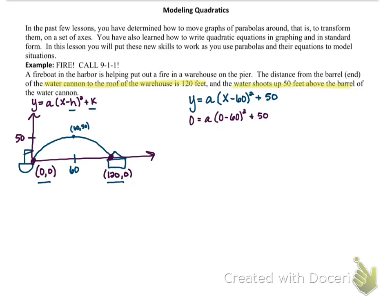Now we want to begin solving for a. So we will have 0 equals a times (negative 60) squared plus 50. Negative 60 squared gives us 3600 plus 50. In order to get the a all by itself, we are going to have to subtract 50 from both sides of our equation.